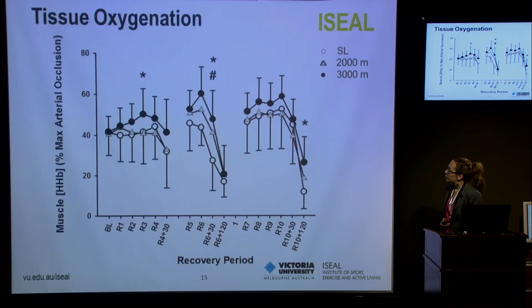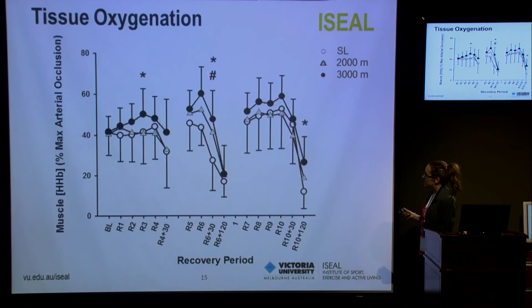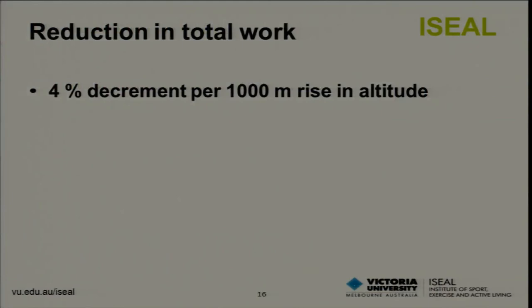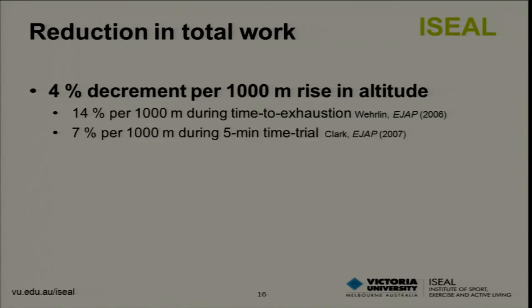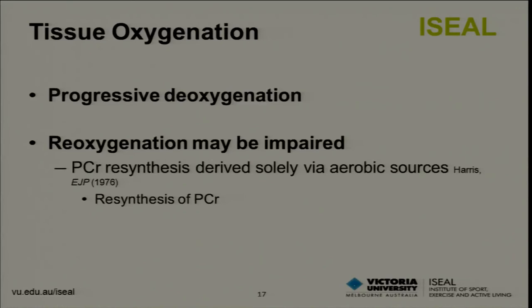For tissue oxygenation, muscle deoxyhemoglobin was higher at 2,000 metres at 30 seconds post sprint 6. At 3,000 metres, muscle deoxyhemoglobin was also higher in recovery periods at 30 seconds post sprint 6 and 120 seconds post the final sprint. We observed a 4% decrement in total work per 1,000 metre rise in altitude — lower than the 14% per 1,000 metres during a time-to-exhaustion test and 7% per 1,000 metres during a five-minute time trial, likely attributable to the intermittent protocol employed. Progressive deoxygenation throughout the protocol suggests reoxygenation may have been impaired, particularly at 3,000 metres, potentially impairing PCr resynthesis.